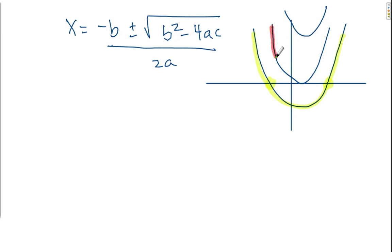When I look at the red graph, it has one real root. And when I look at the blue graph, it has zero real roots.